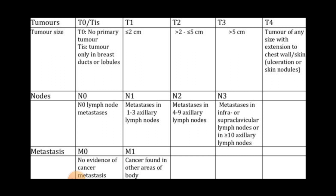The M classification: when there is no evidence of cancer metastasis it is M0, and when there is evidence of metastasis to distant organs it is M1. This is the TNM classification of breast cancer staging. We can now look at the overall staging system according to this classification.